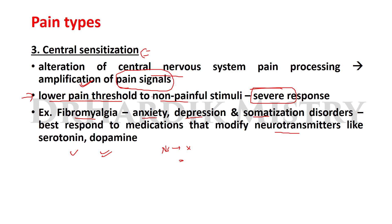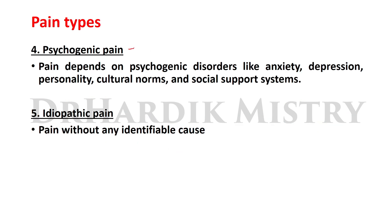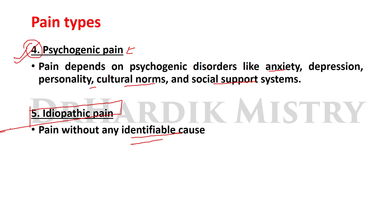The fourth type is psychogenic pain, which depends on psychogenic disorders such as anxiety, depression, personality factors, cultural norms, and social support systems. The fifth type is idiopathic pain — pain without any identifiable cause. These five types together are: nociceptive or somatic pain, neuropathic pain, central sensitization, psychogenic pain, and idiopathic pain.